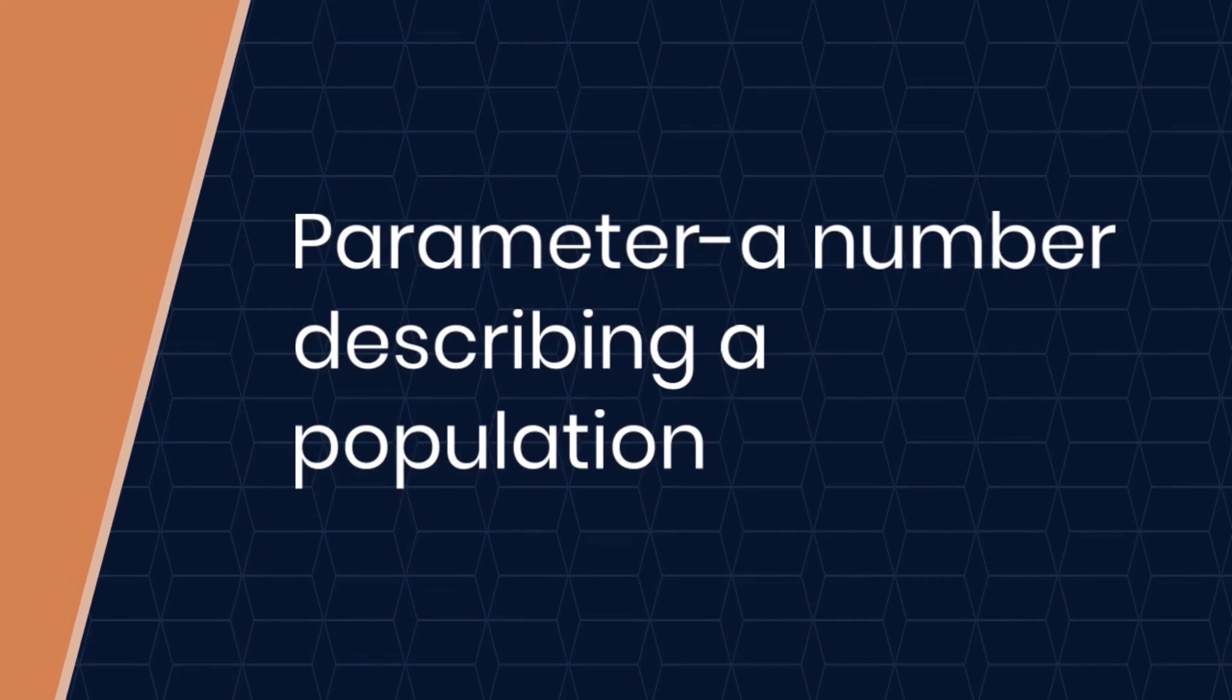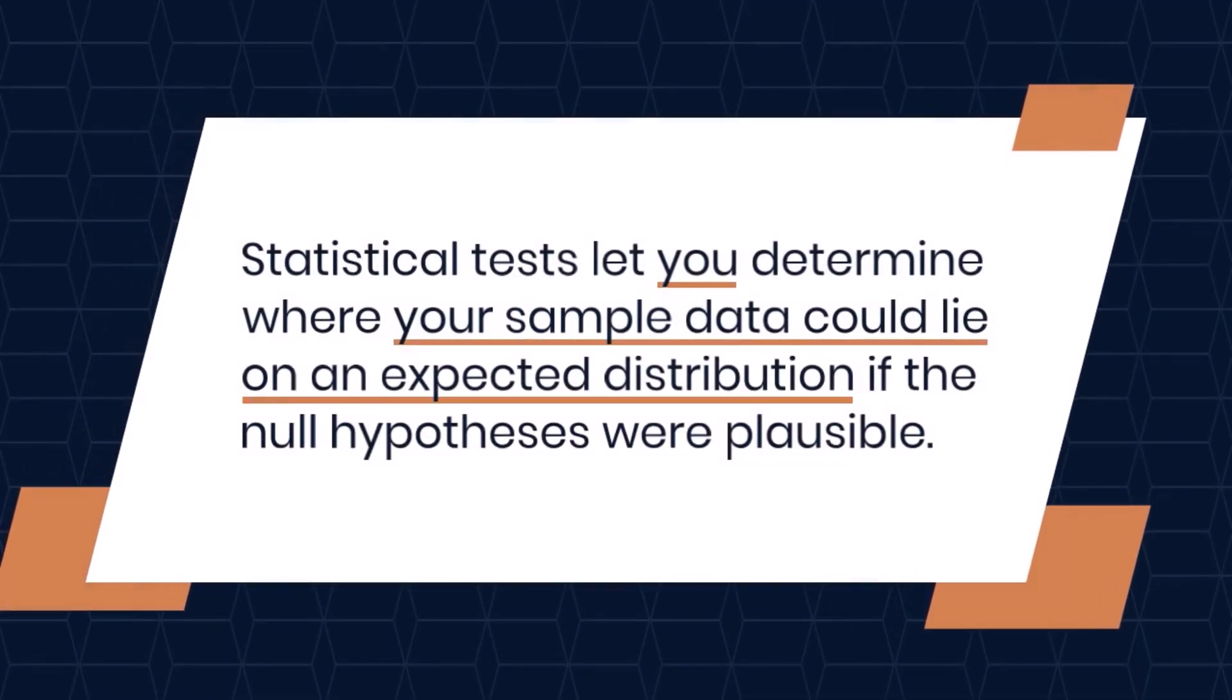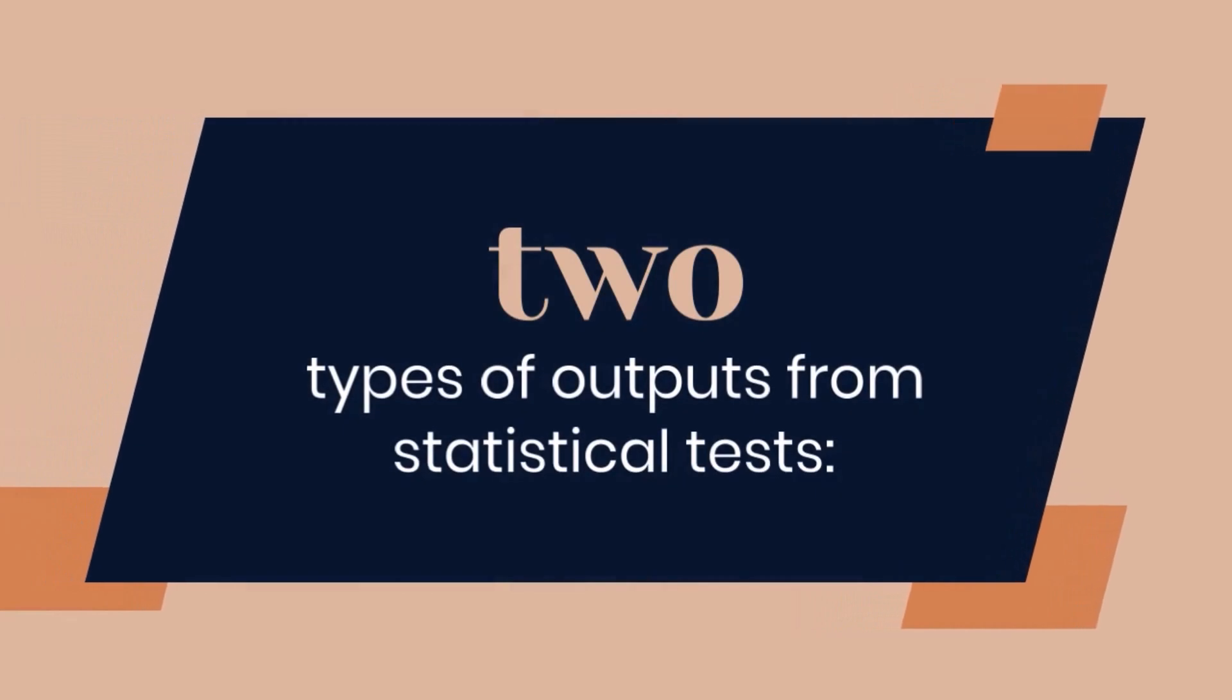Statistical tests let you determine where your sample data could lie on an expected distribution if the null hypotheses were plausible. Usually, you get two types of outputs from statistical tests.